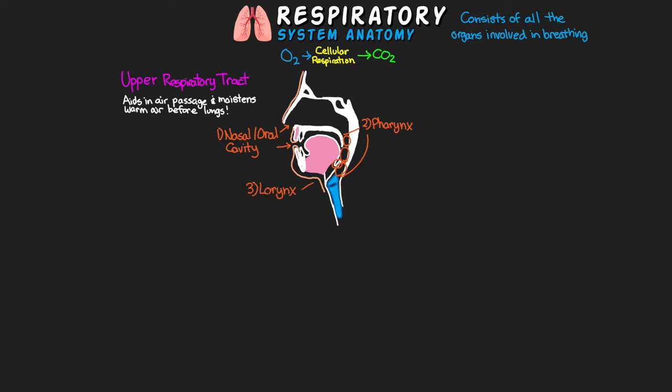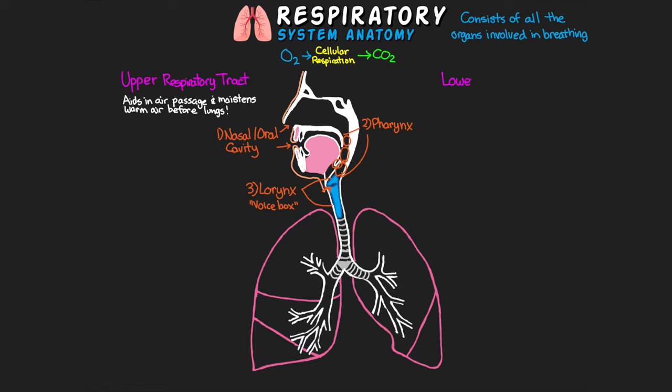The last part of the upper respiratory tract is the larynx, also commonly referred to as the voice box. You'll sometimes see this included in both the upper and lower respiratory tract. It plays a vital role in air passageway as well as vocalization, and the vocal folds here are one of our primary landmarks for intubation.